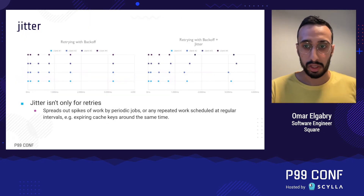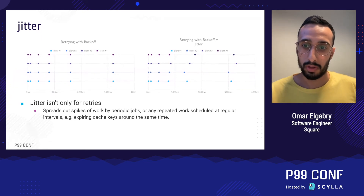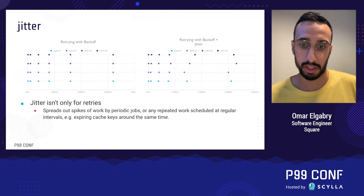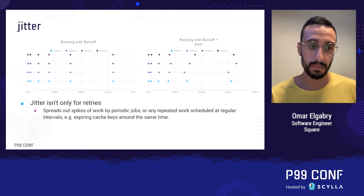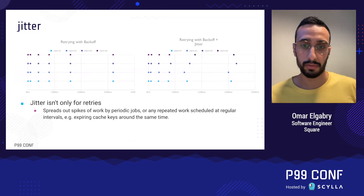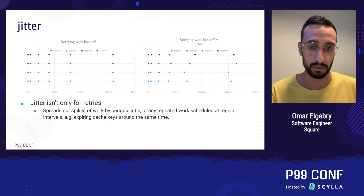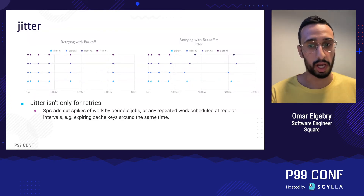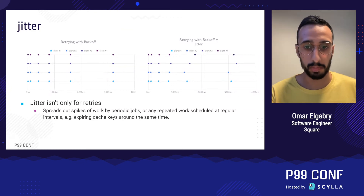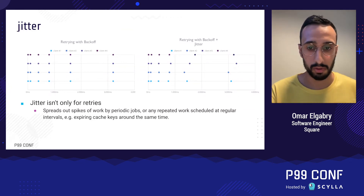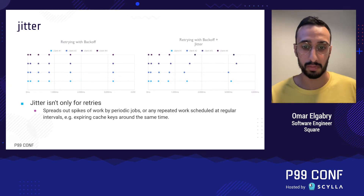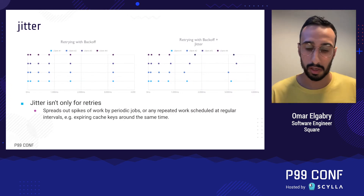This diagram shows the difference between retrying with backoff versus retrying with backoff and jitter — with randomness, retries are spread out and do not happen at the same time. Jitter is not only for retries: it can help spread out spikes of work from periodic jobs. For example, expiring cache keys around the same time increases load on the cache and the database, potentially reducing system latency and availability.